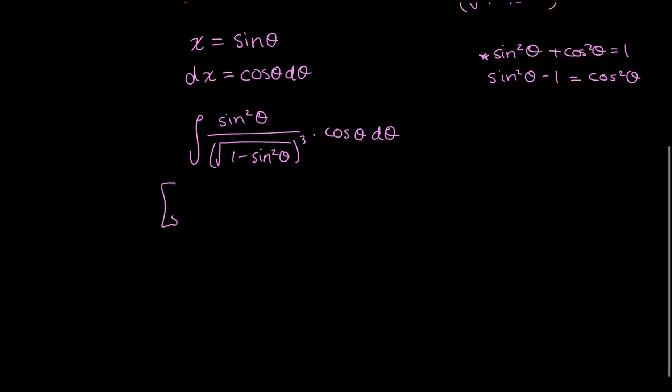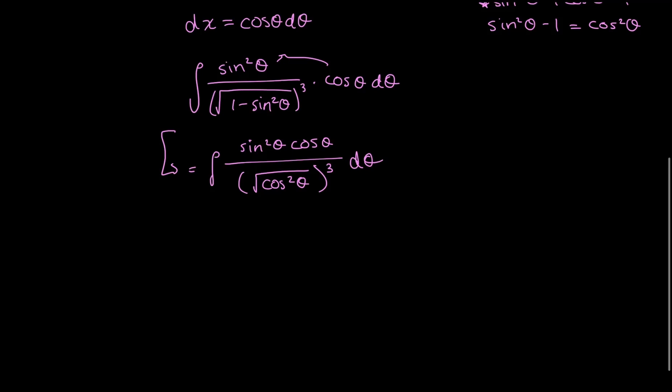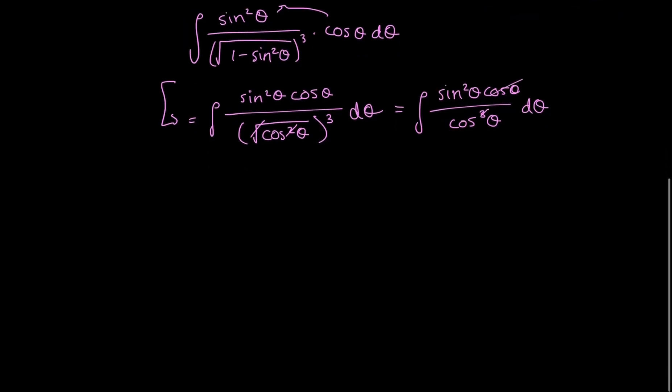So rewriting this, sine squared theta, I'm going to pull this cosine up here too, so cosine theta over the square root of cosine squared theta to the power of 3 d theta. That square and that square root will cancel. So I'm left with integral of sine squared theta cosine theta over cosine cubed theta d theta. The cosine on top cancels with one cosine in the denominator, so now my integral is sine squared theta over cosine squared theta d theta.